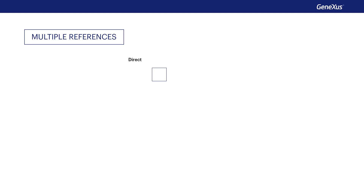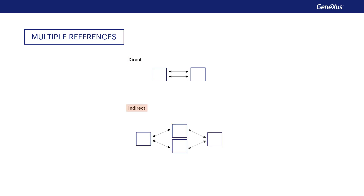In previous videos, we've studied the case of multiple references from one table to another directly related to it, and also the case in which these references are indirectly related since from one table we have two paths to get to another, so it's often necessary to perform disambiguation using subtypes. In this video, we'll study another case of indirect multiple reference, its problems, and possible solutions.